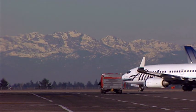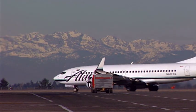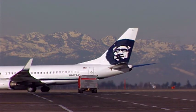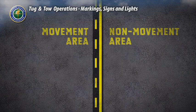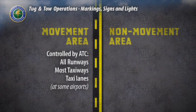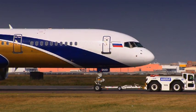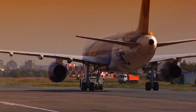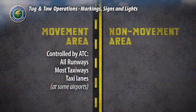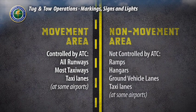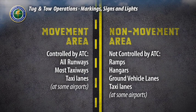There are two general zones at tower-controlled airports within which aircraft and ground vehicles will be located at any given time: movement areas and non-movement areas. Movement areas include all runways, most taxiways, and taxi lanes at some airports. You are never allowed to enter or move within these areas without air traffic control clearance. Non-movement areas such as ramps, hangars, ground vehicle lanes, and taxi lanes at some airports are not controlled by air traffic control.